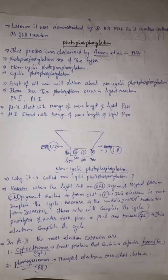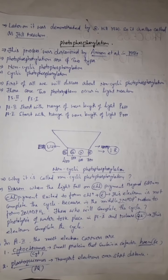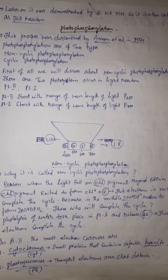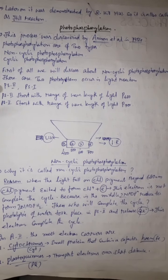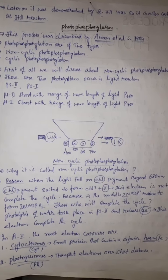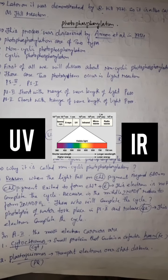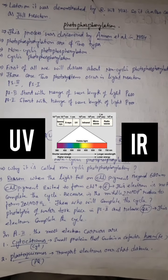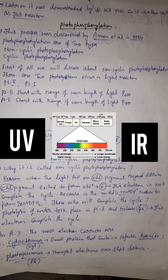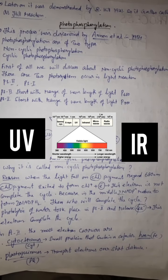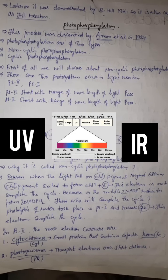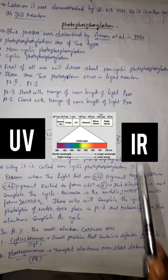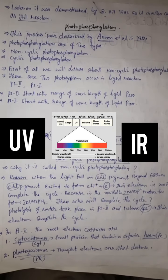Photo phosphorylation was discovered by Arnon et al. in 1954. Photophosphorylation is of two types: non-cyclic photo phosphorylation and cyclic photo phosphorylation. There are two photosystems in light reaction: PS2, which starts with a wavelength of P680, and PS1, which starts with a wavelength of P700. Plants use light from blue to red, ranging from 400 to 700 nanometers. Below 400 we call ultraviolet rays and above 700 we call infrared rays — these are not useful for photosynthesis.